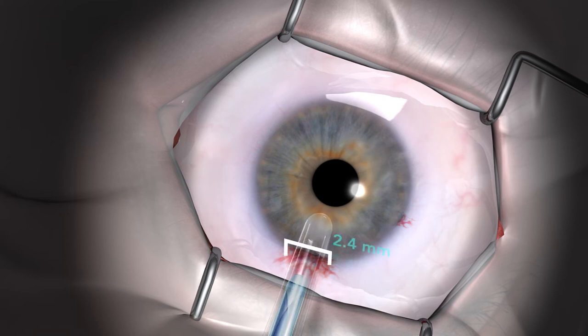Insert the tip of the cannula through a 2.4 mm incision. Based on experience and preference, surgeons may choose to use a smaller incision size.